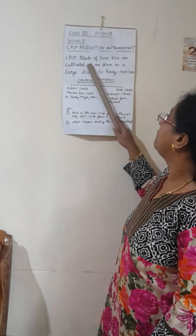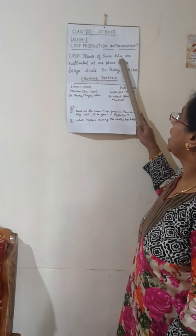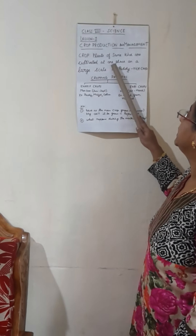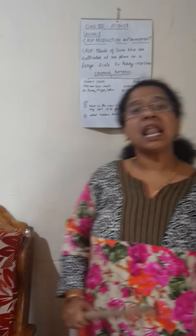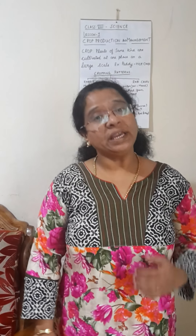Crops are plants of the same kind that are cultivated at one place on a large scale. So in one piece of land, the same kind of crop is grown — it can be a crop of tomato, a crop of rice which is called paddy, a crop of wheat, or any such food items grown in the same piece of land.